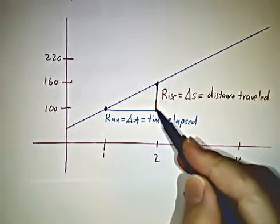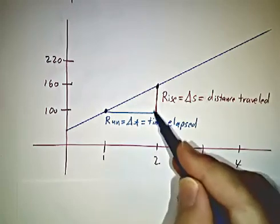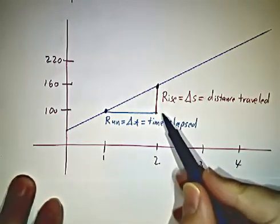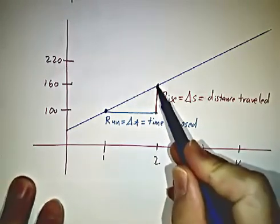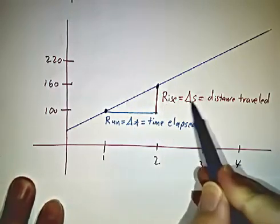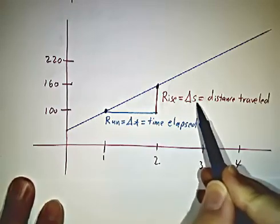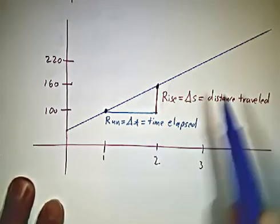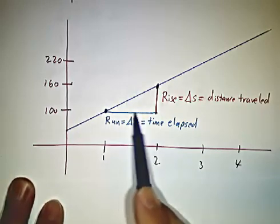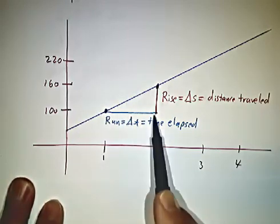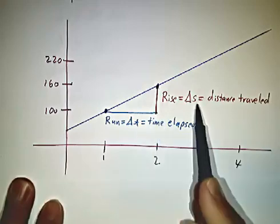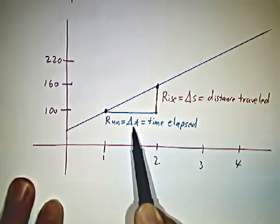So the rise in this line is the change in the output. It's output at the end minus output at the beginning. So delta S, if you call S your distance, we use the Greek letter delta to mean change. Delta S is 60 miles. The run is how long it took, in this case, 1 hour. So delta S is 60 miles. Delta T is 1 hour. You're going at 60 miles an hour.